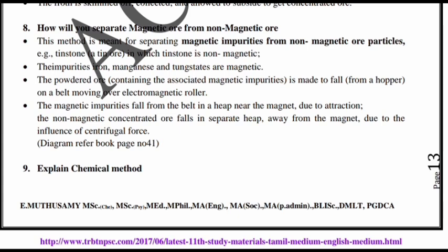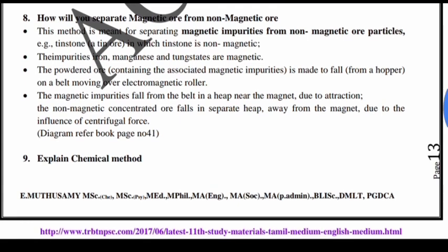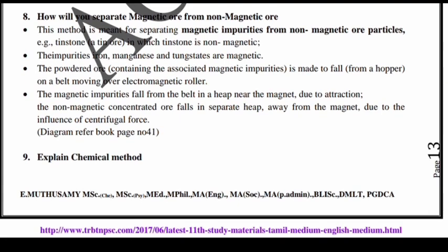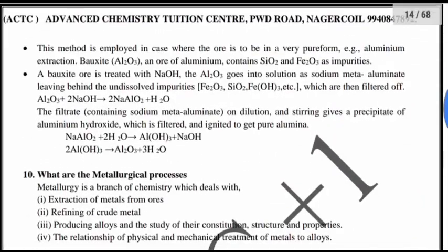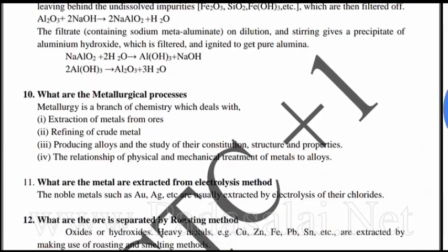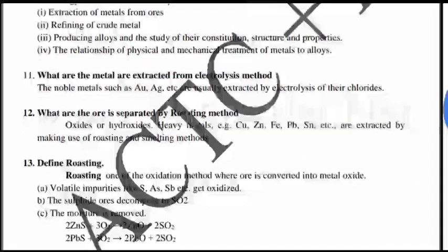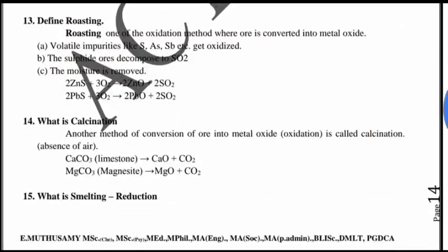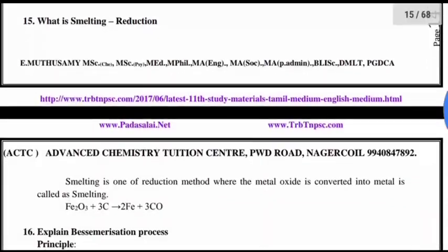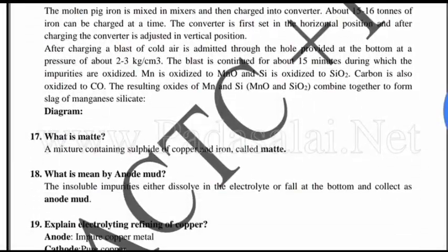Magnetic ore separation is easy, and if you have learned it, it will be easy. What is the metallurgical process? This is all important — roasting, calcination, and melting.